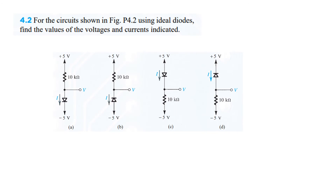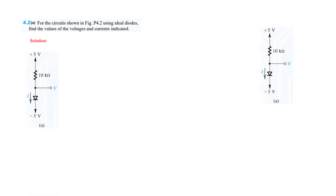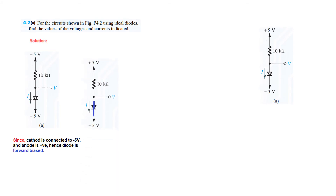Now let's do the end chapter problems, which is similar. For the circuit shown using ideal diode, find the value of voltage and current. For part A, the cathode part is connected to minus 5 and the anode part is connected to plus 5, therefore this diode will conduct — it is forward biased and current will flow. Current is flowing from plus 5 to minus 5, so plus 5 minus minus 5 divided by 10K is 1 milliampere.